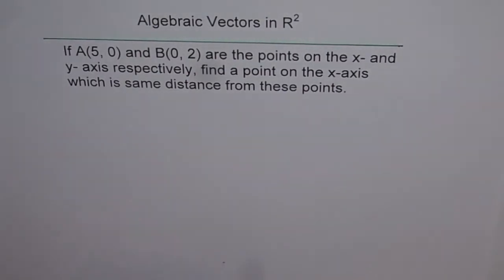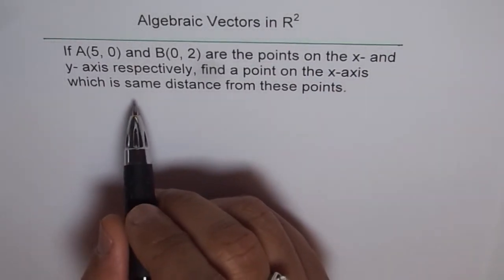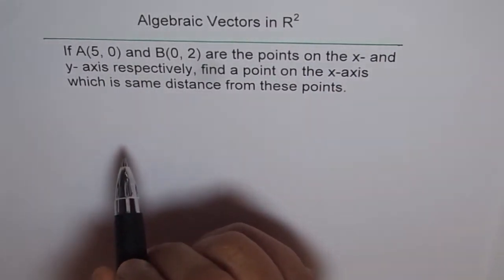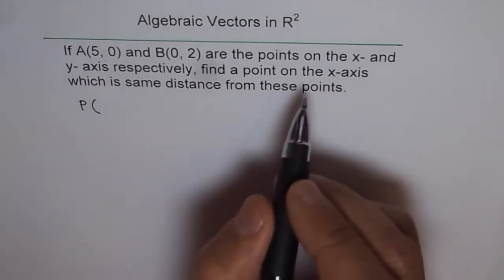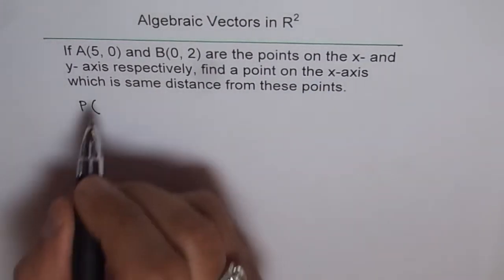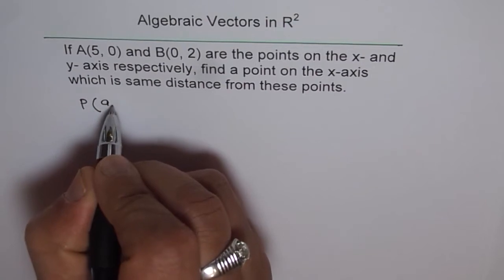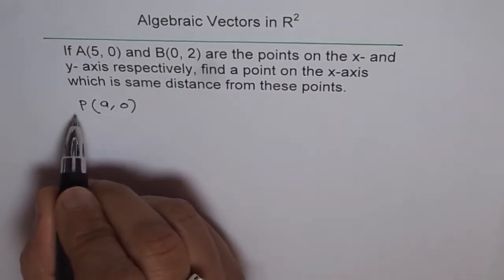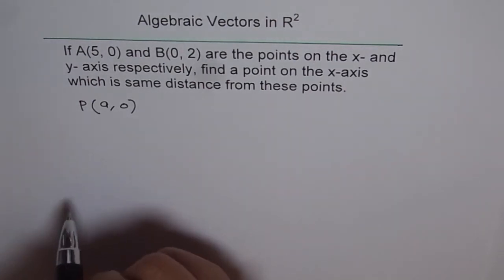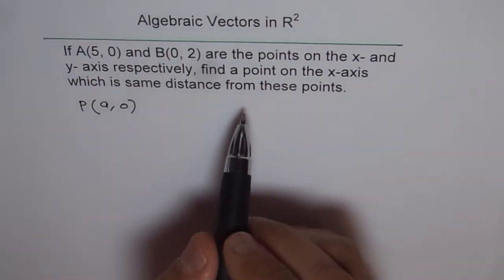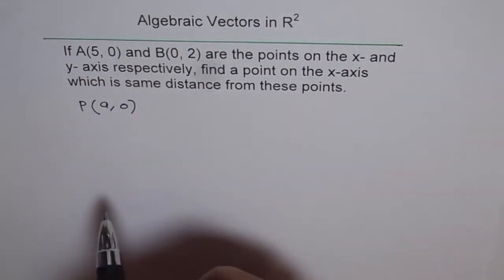So to solve this problem, let's assume that the point on X axis which is same distance from these two points is P, and let the coordinates of the point be - since it is on X axis, therefore the Y component will be 0 and X could be A. So we could write this as (A,0). So the point P which is (A,0) will be on X axis. Now we need to show that this point P is same distance from A and from B.